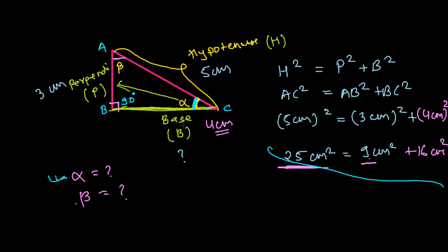To find out alpha, you can take any trigonometric ratio like sine, cosine, tangent, cotangent, secant, anything. For now, I'm taking sine.